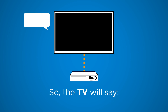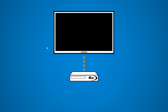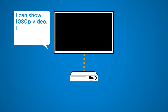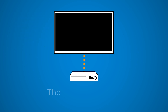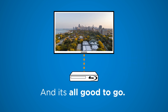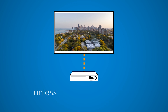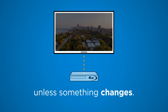So the TV will perhaps say: 'Hi, I am a Philips TV and I can show 1080p video. I can play two-channel stereo sound.' The Blu-ray will say: 'Okay, then here is a 1080p video signal with two-channel stereo sound,' and it's all good to go. Once connected, everything will stay in sync unless something changes.